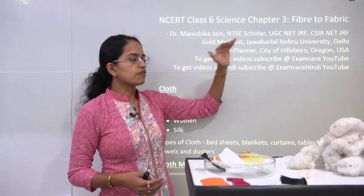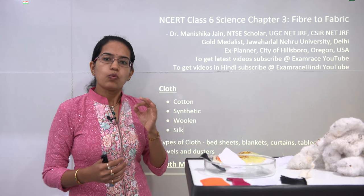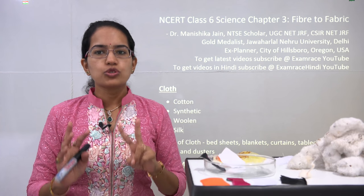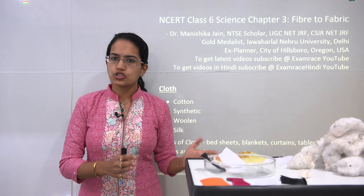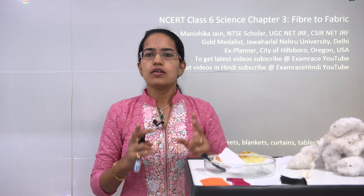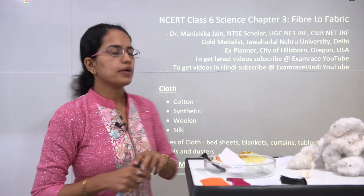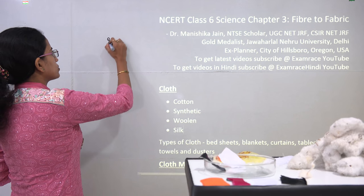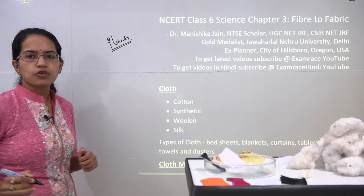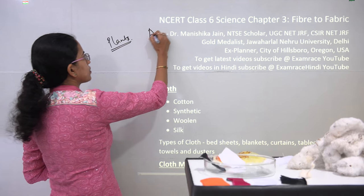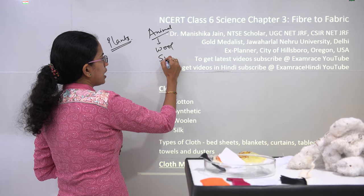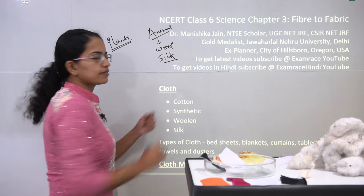First, let's talk about fiber and where it comes from. Fiber can come from two sources: natural and artificial. Natural sources can again be from plants or from animals. From animal sources, you predominantly have wool and silk.